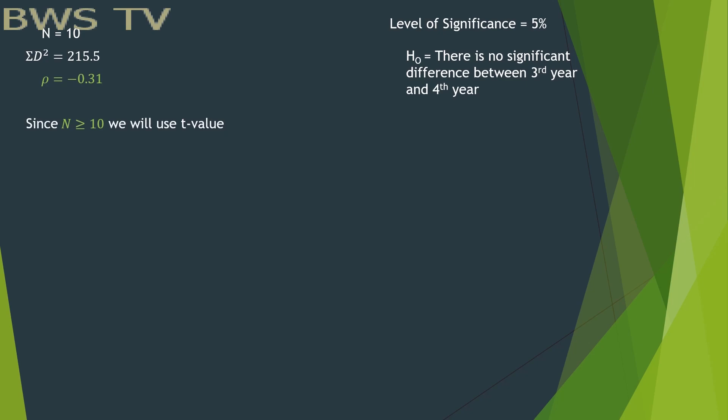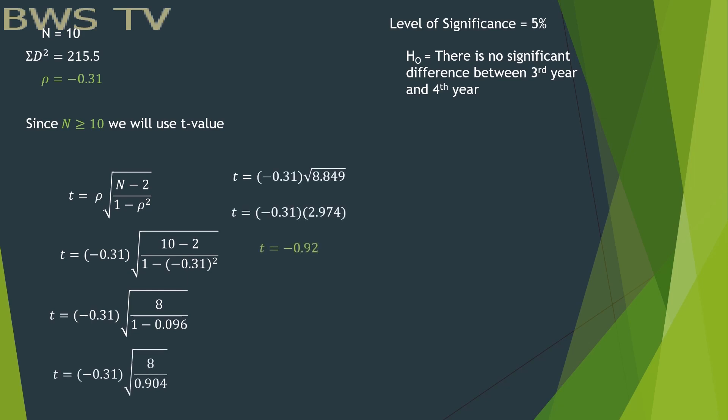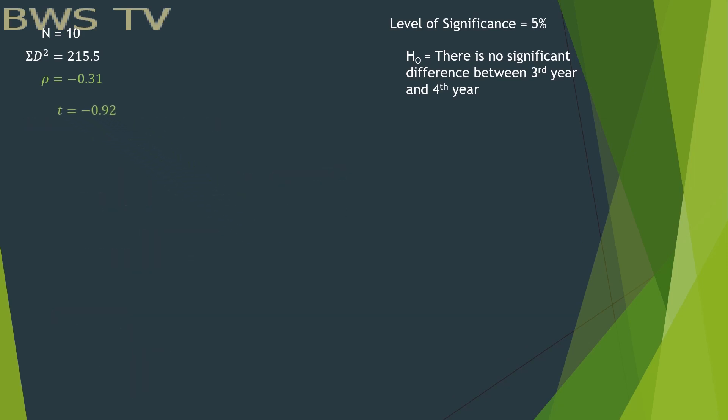This time that n is equal or greater than 10, in this case it is equal to 10, we will now use t-value formula. Then DF. Now that we use t-value, we have a separate table for t-value.